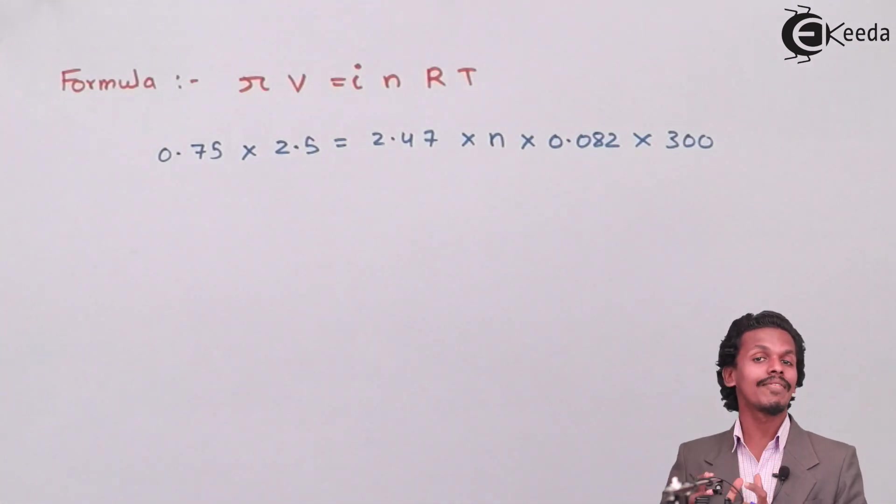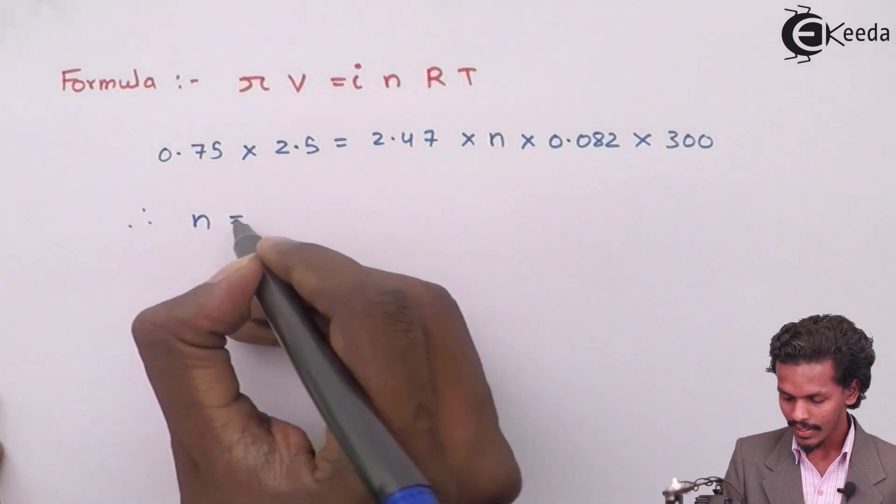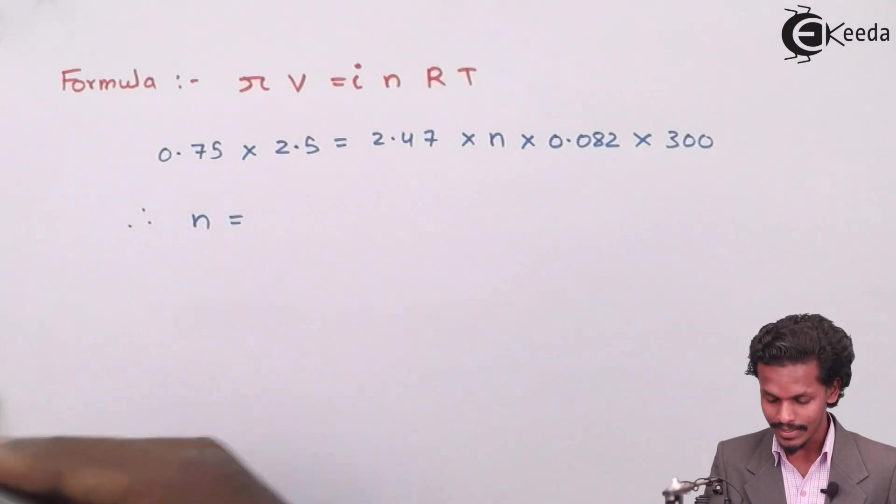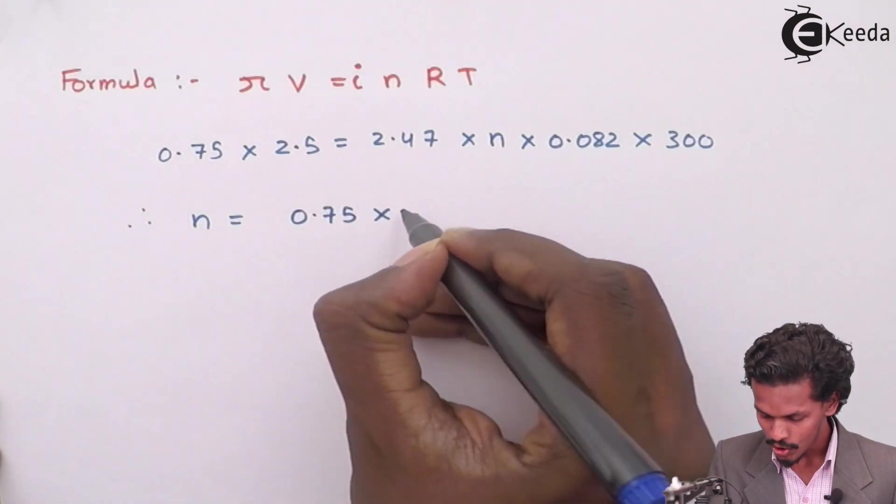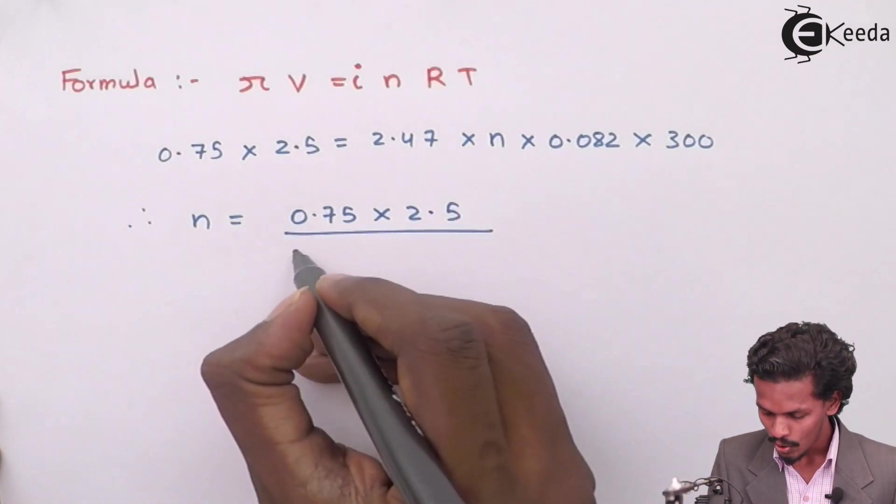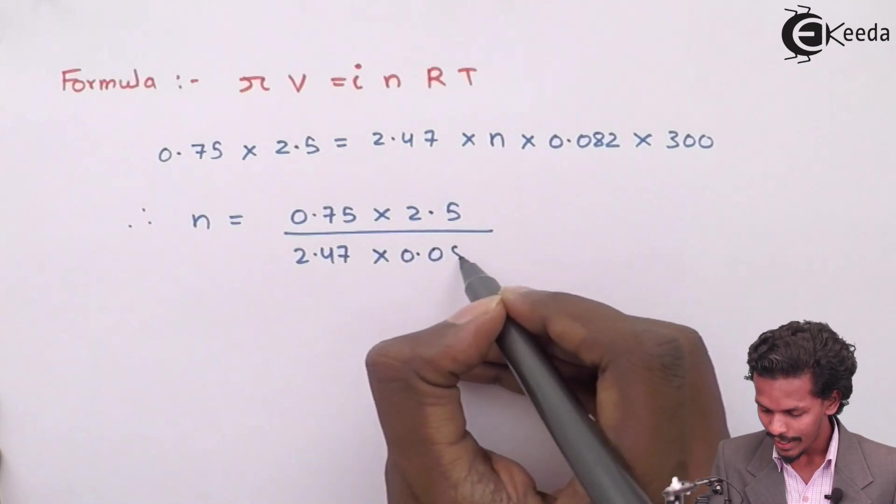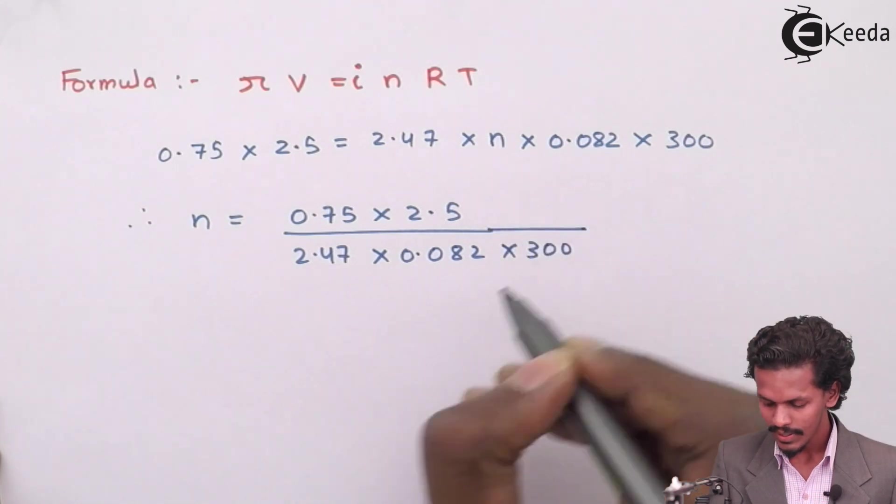300 Kelvin. So by this we could determine what is the value of n. So let me separate it first. I have kept the n as it is and I have shifted all the values aside.